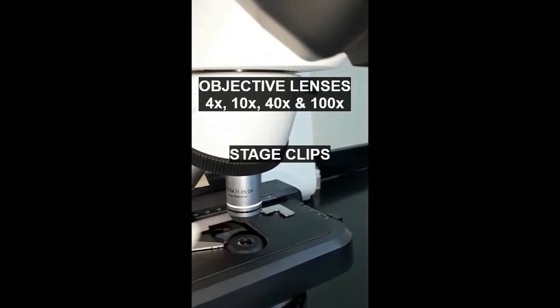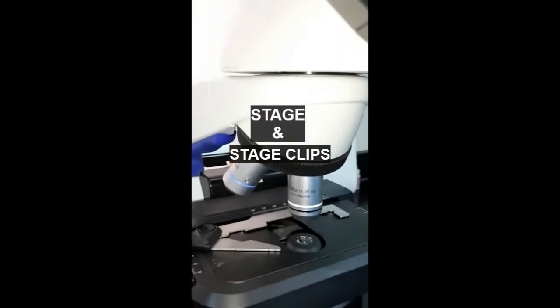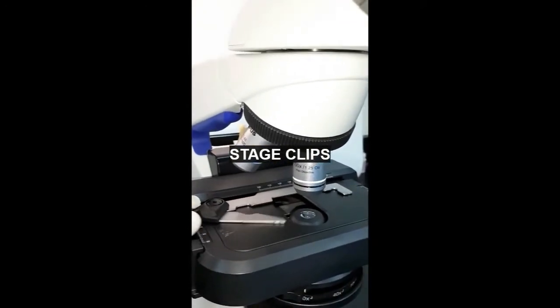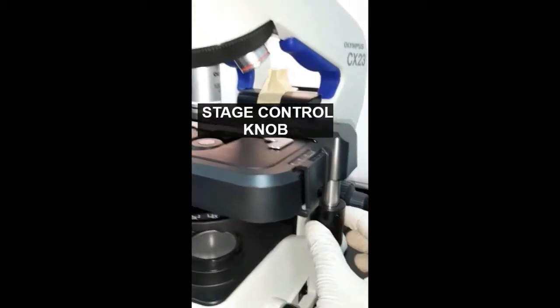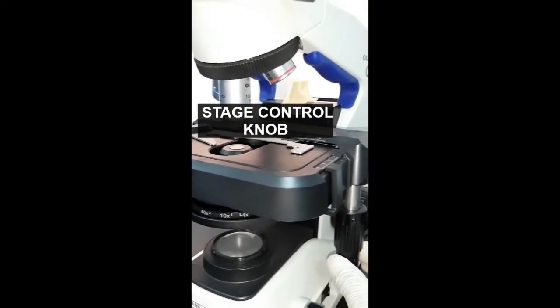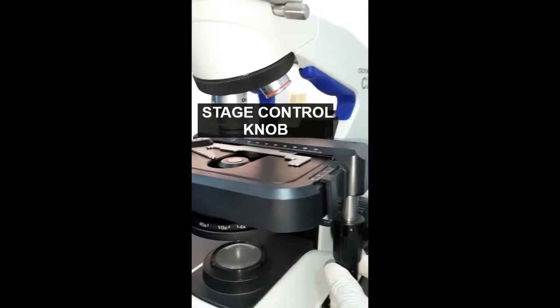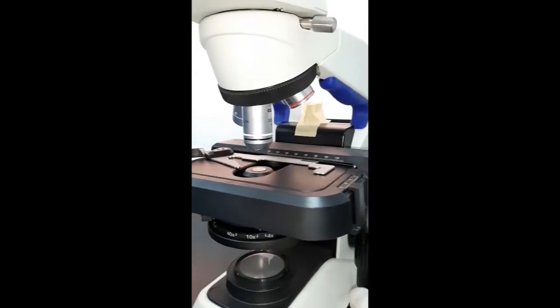The next part is the stage, which is the platform where the slide is placed. The slide is attached to the stage by the stage clips. The stage control knob is the next part. It helps to move the direction of the slide left and right and back and front.